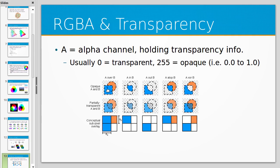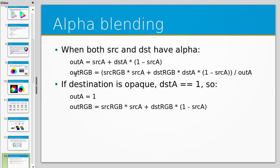If we wanted to blend two objects together, we would need a mathematical approach to blend those colours to get the final colours — for example, working out what that colour is in the middle. The output alpha of a pixel in the middle of that blend will be a function of the source alpha and the destination alpha, thinking of alpha as floating point numbers from 0.0 to 1.0.